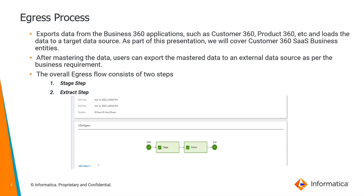Once we load and master the records in MDM Business 360 applications, the very next business requirement is to export that data and push it to a respective downstream for subsequent stages. You can export those mastered customer data from the Business 360 data store to an external data source through this egress process. Overall, the egress flow consists of two steps.